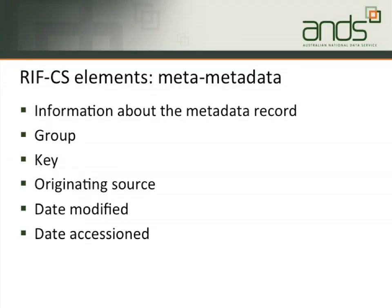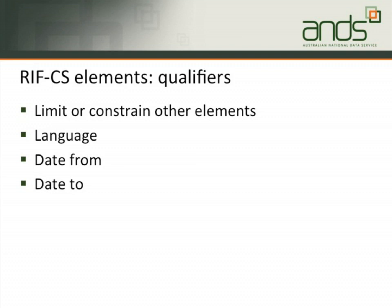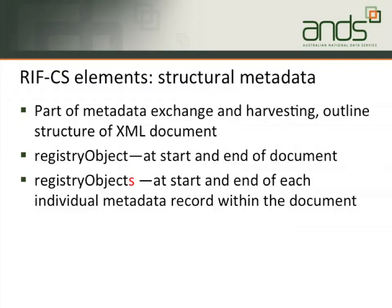Very important are relations with other kinds of entities as described by their metadata records. Spatial and temporal coverage and subject are extremely important for discovery and will especially — the spatial coverage — be very important for trying to link datasets together in the future. Good descriptions including rights information — copyright or any other rights that apply — and links to related information such as publications. We also need metadata information about the metadata record itself: group, which we use for display purposes in Research Data Australia; a key which identifies the metadata record so that when you harvest it can replace the old one with the new one; and information about where the record came from, how old it is, and what's happened to it. You can also constrain the information by saying what language it's in or dates from and to that it was valid from.